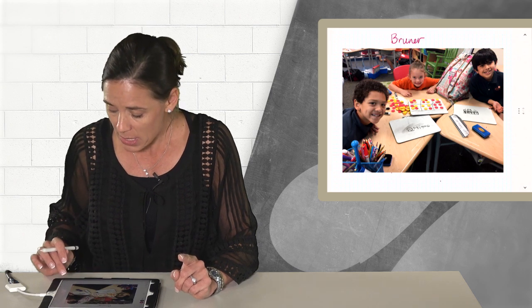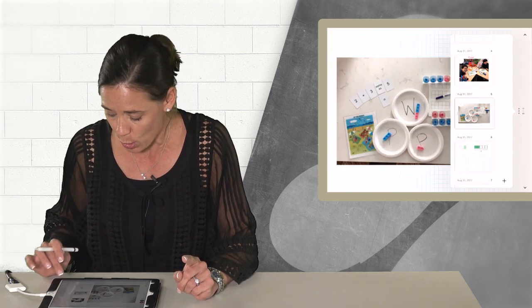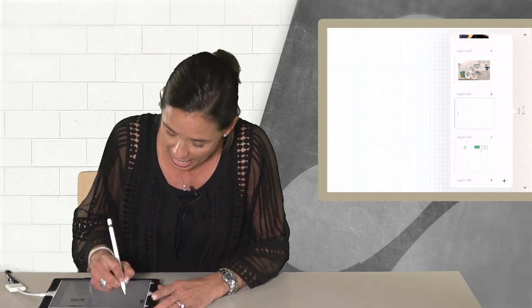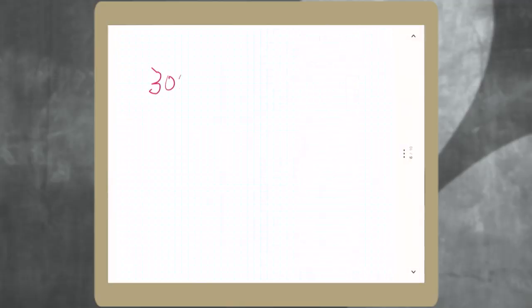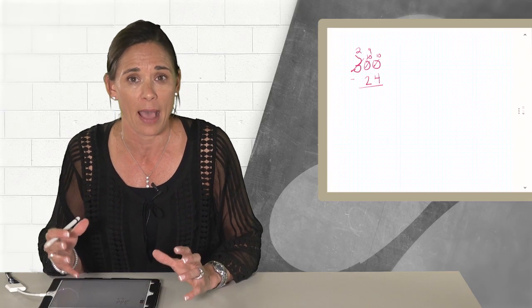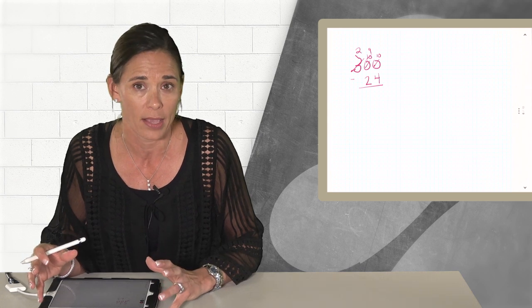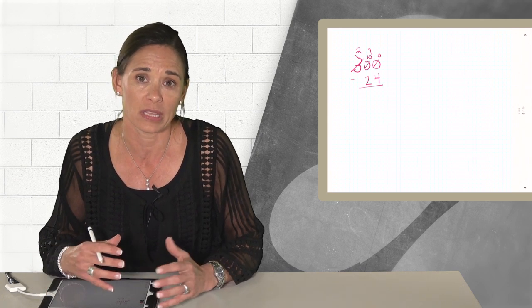In linking ideas, Richard Skemp, a British researcher, reminds us that sometimes the conventions we use, conventions such as when we do problems like 300 minus 24, and we have kids crossing out numbers. These conventions are sometimes mysterious or encoded and that there has to be a progression so that students can relate ideas. They are not going to understand that abstract or that conventional method right away, so it's our job to link those ideas.